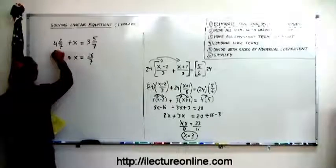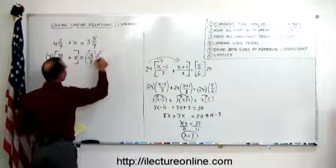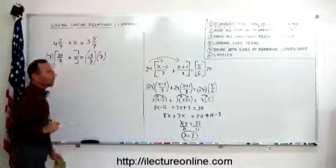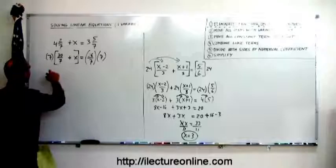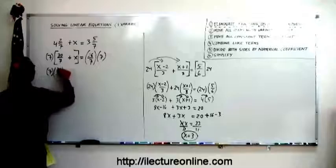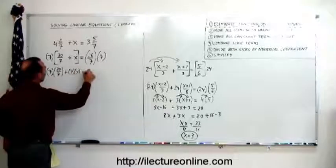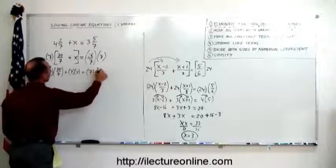so we multiply the left side by 7, and we multiply the right side by 7. Then we distribute those, so this becomes 7 times 30 over 7 plus 7 times x is equal to 7 times 26 over 7.